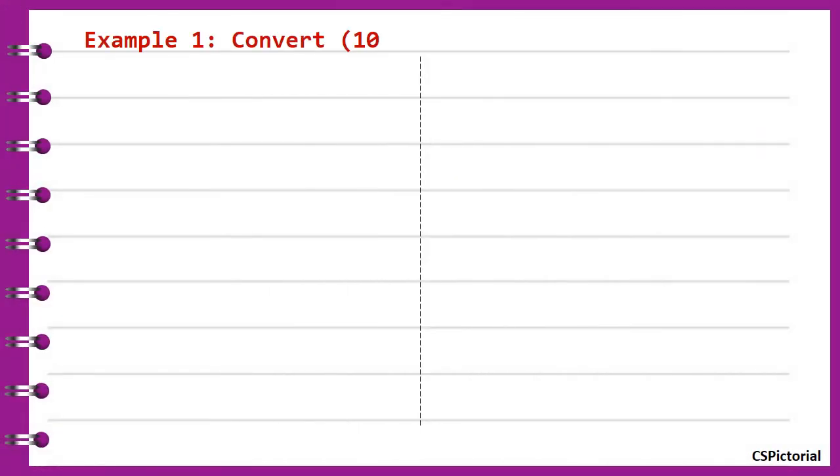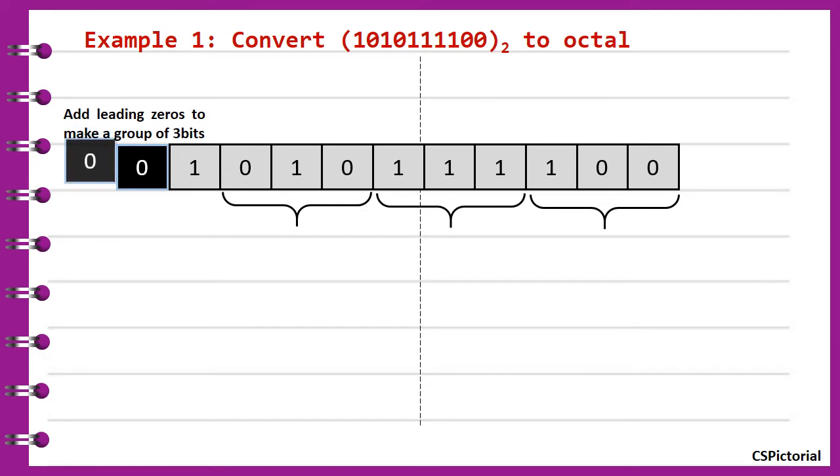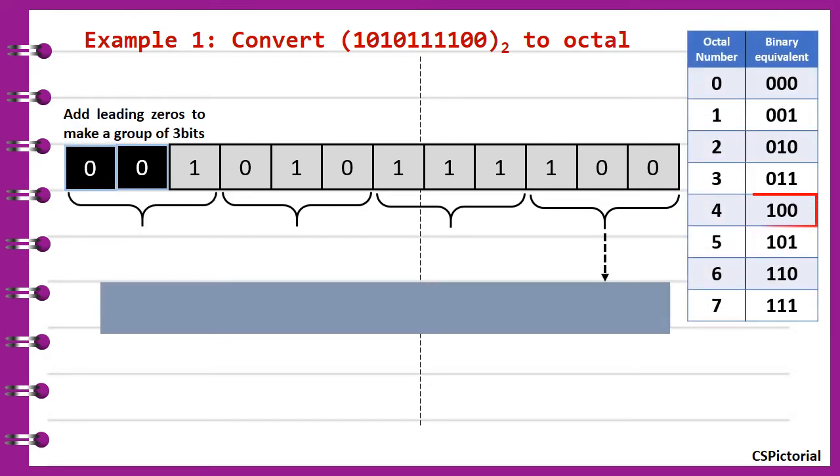To convert a binary number, group the binary number into 3 bits. Start from right to left and add leading zeros if required. Replace each group with the corresponding octal digit.